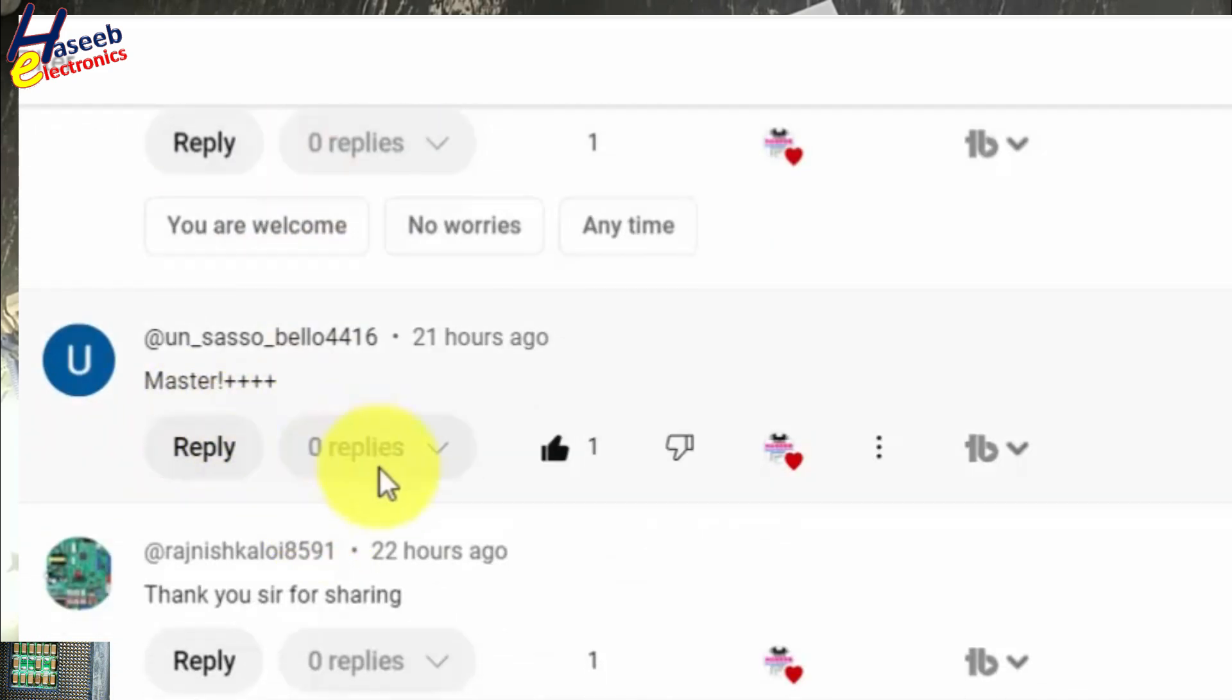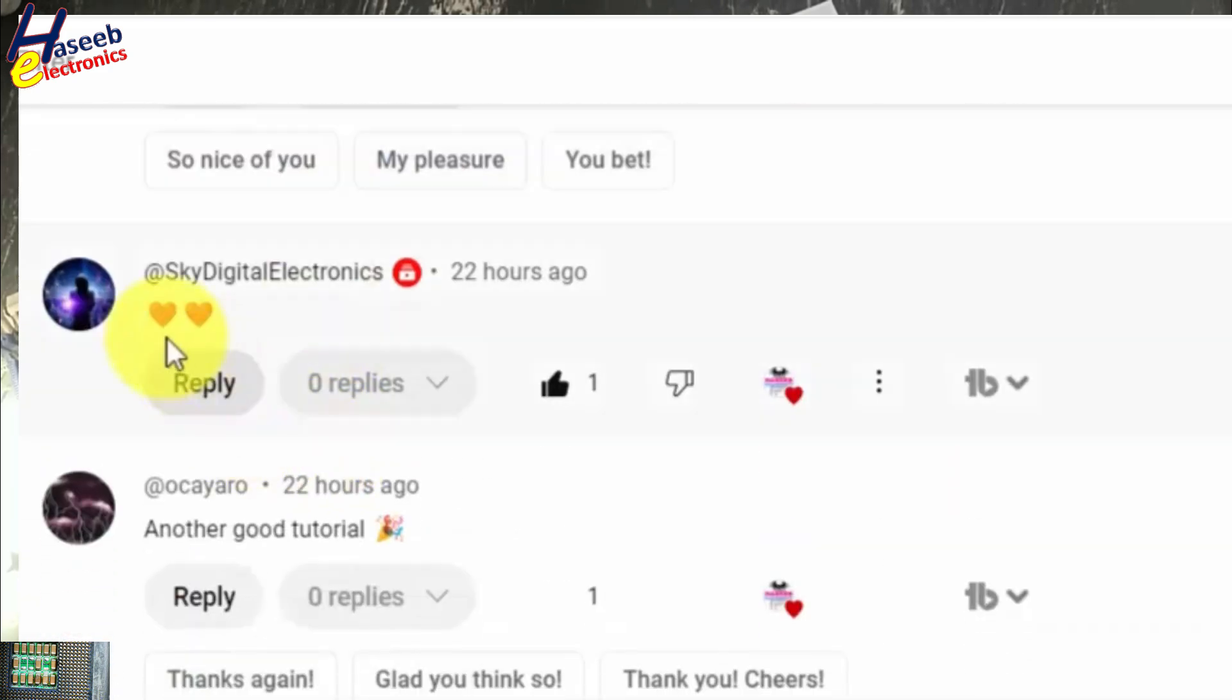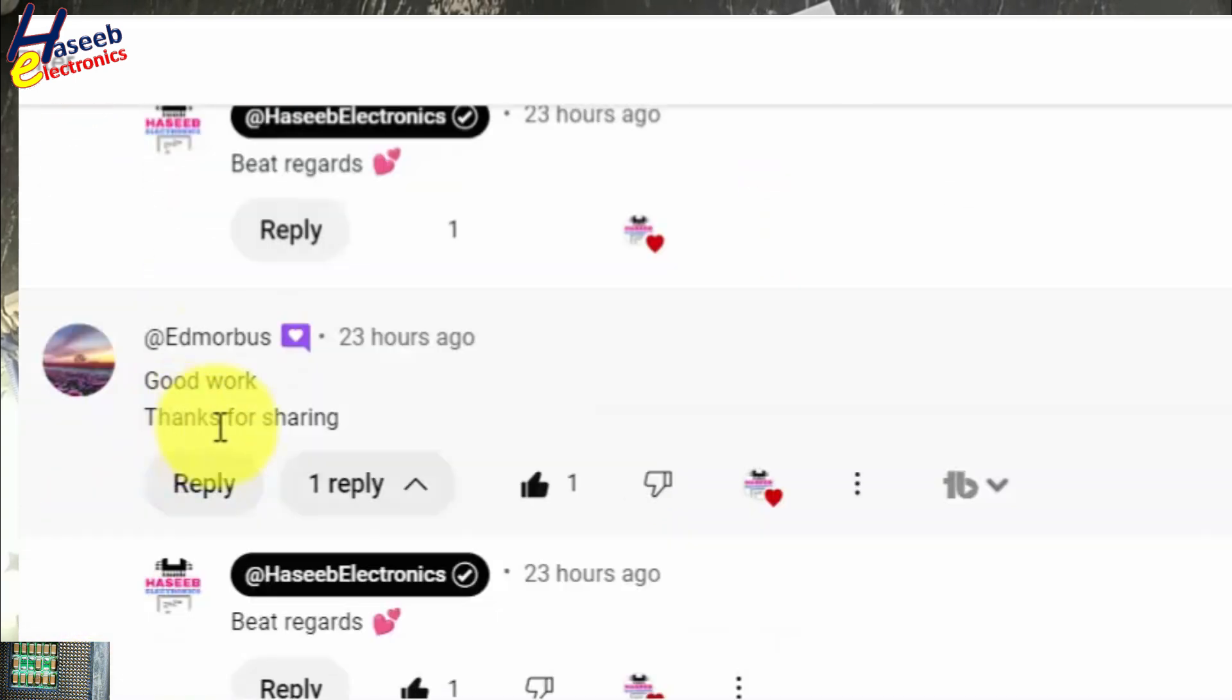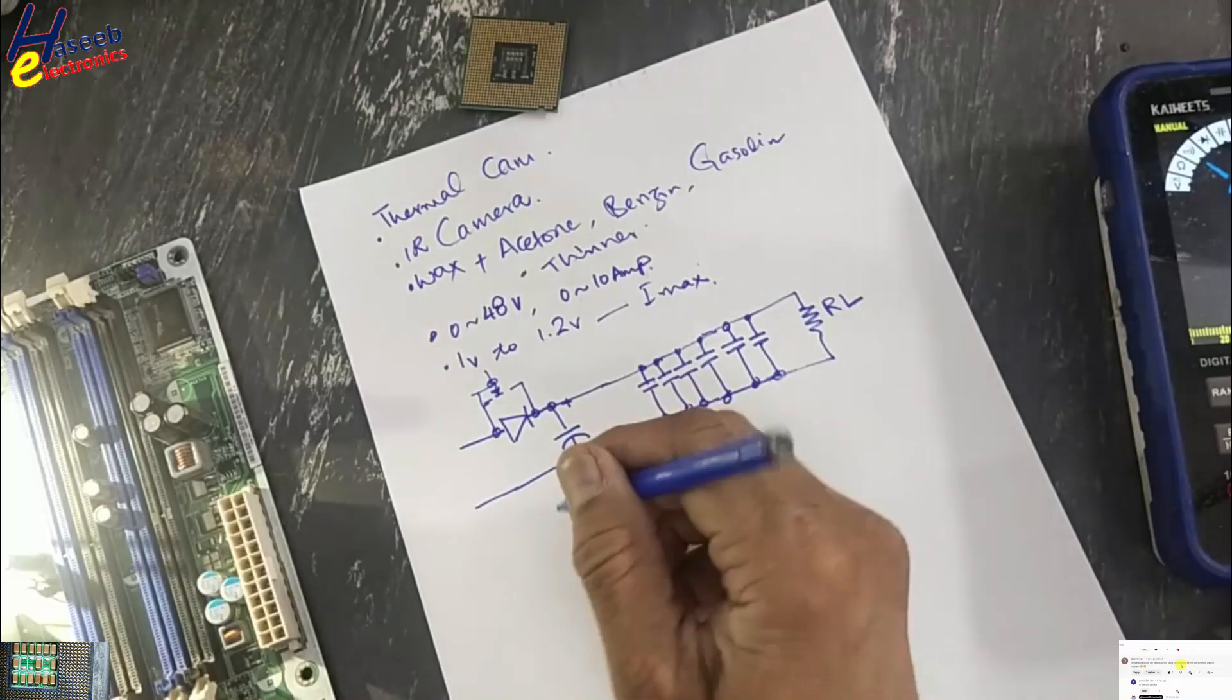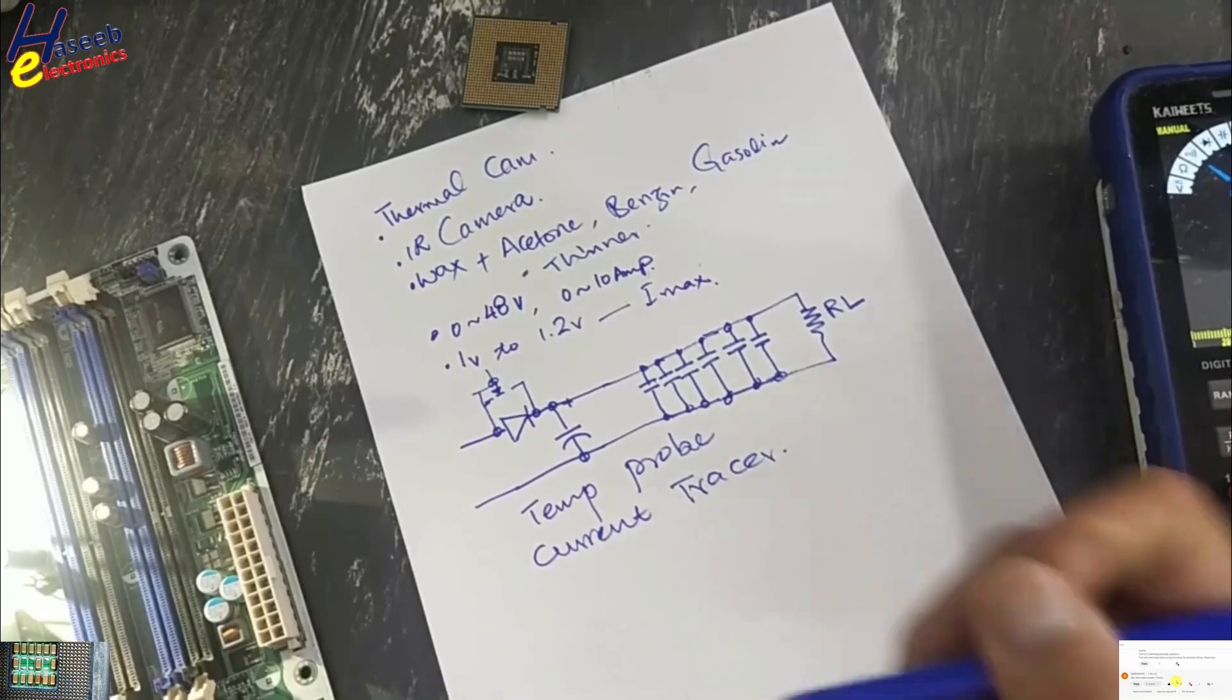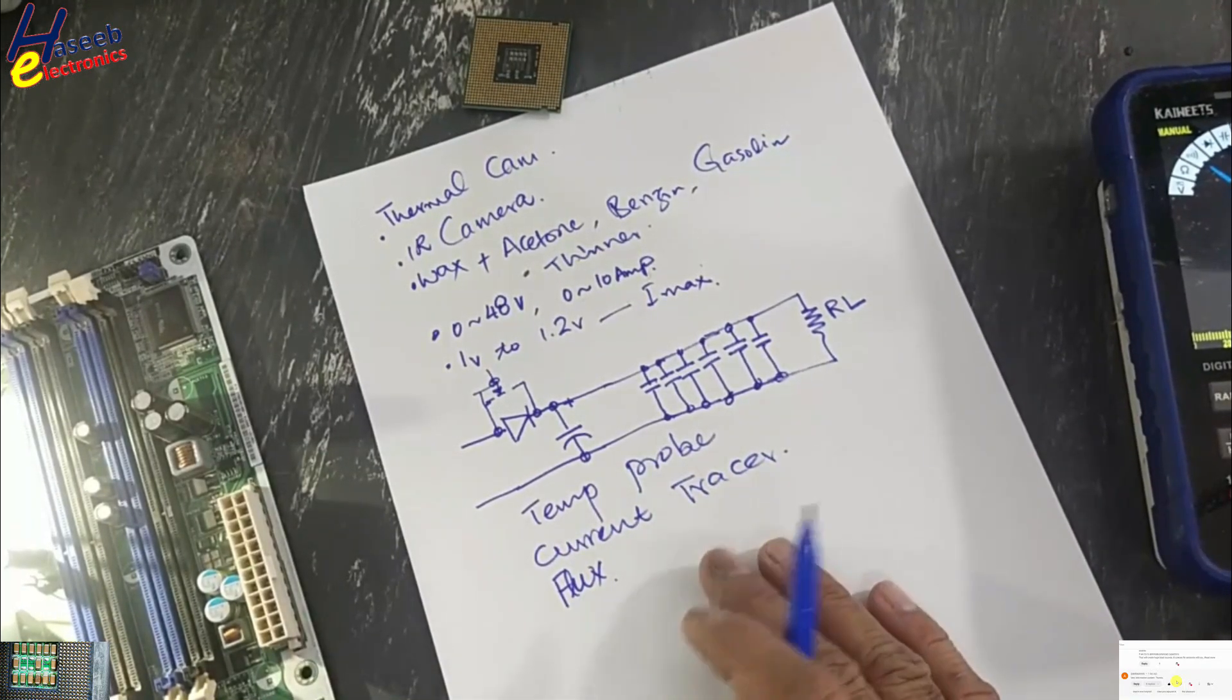Very effective, thank you. Excellent, thanks for sharing. Thank you very much, Master Plus Plus Plus. Thank you, thanks for sharing. Thank you Sky Digital Electronics, thank you. And other good tutorial, nice sir, good work, thanks for sharing. Temperature probe will help us to find faulty components. Temperature probe, current tracer - current tracer is also very useful. We can also use low temperature melting flux, salt and paste - that is also useful. Informative content, thank you.